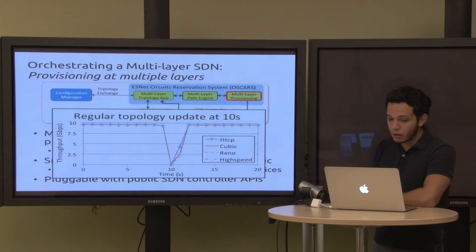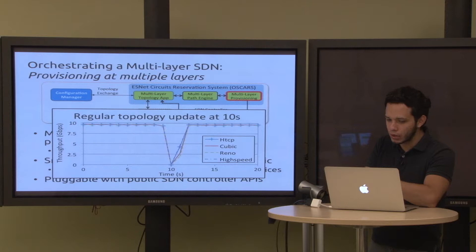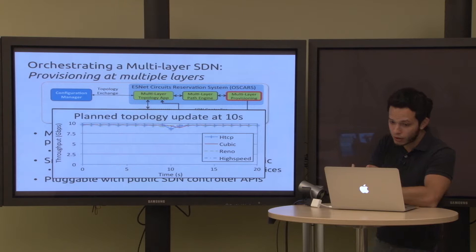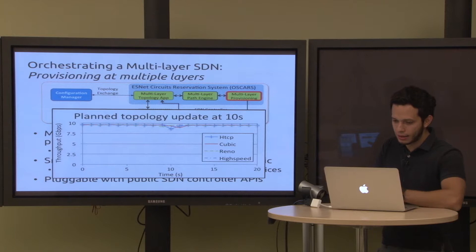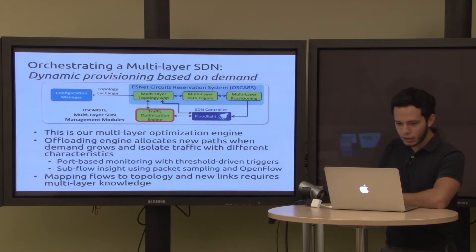If traffic is being sent at full speed during a topology change, you get a drastic throughput drop. We show that changing the topology at time 10 seconds causes a steep drop, then TCP recovers to full speed on the new circuit. Because we are aware of all layers and all route updates being done, we carefully track when each stage has completed. With a planned topology update using our system, the impact on application performance is minimal when doing a route update.